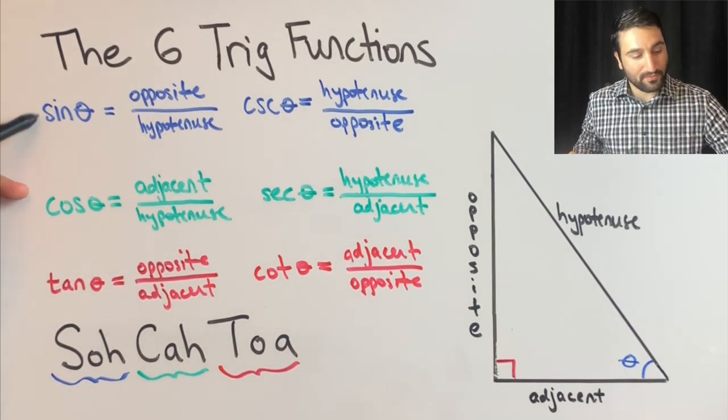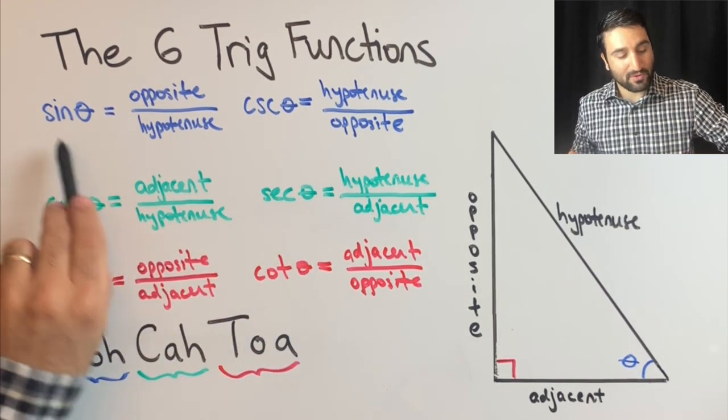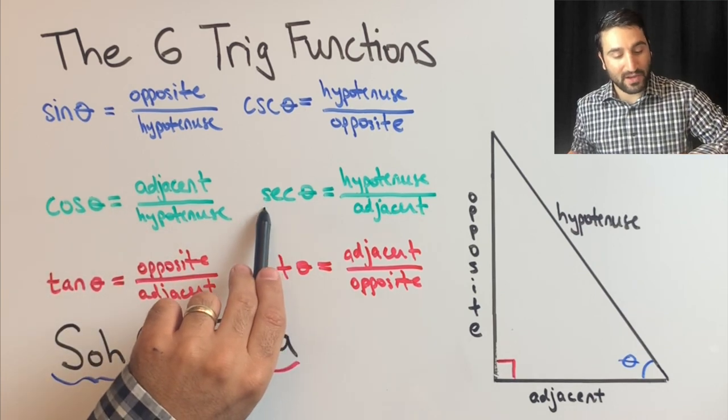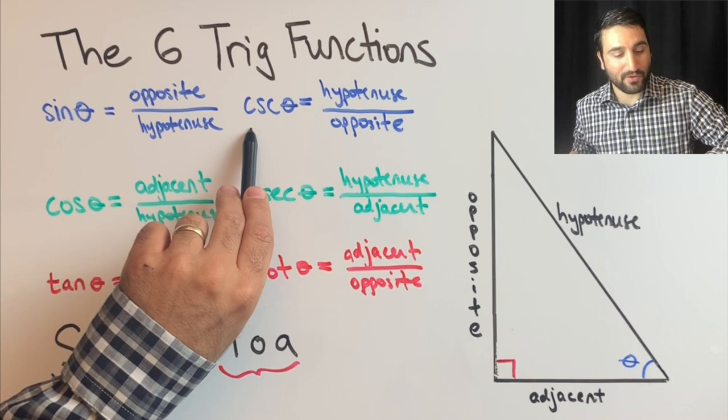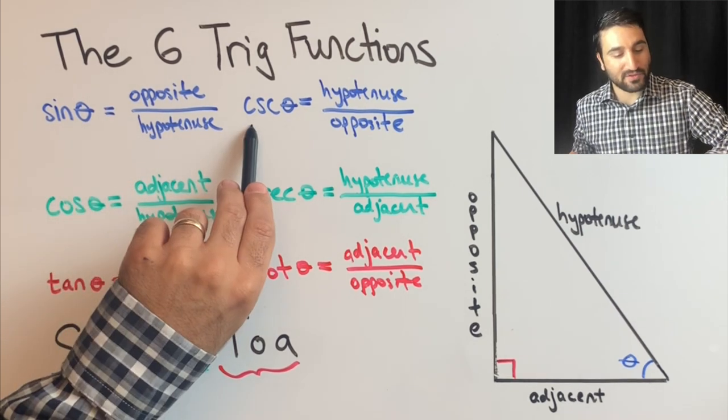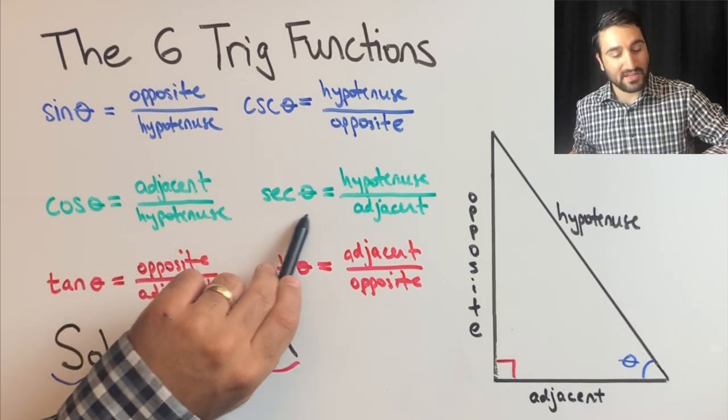So sine's reciprocal - this might be confusing because there's secant here. Sine's reciprocal is not secant, not the one that starts with an S, but the one that starts with a C. It's kind of reverse. So sine's reciprocal is cosecant,